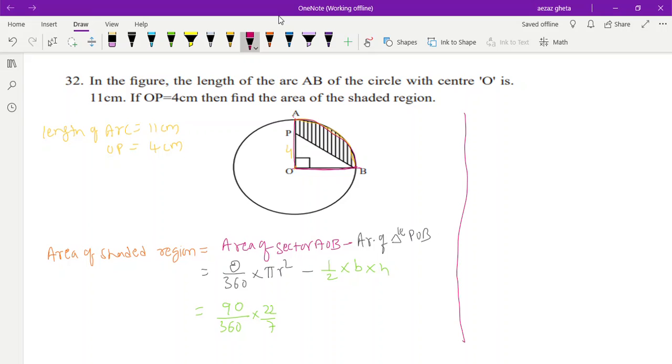How we will find radius? By using the formula length of arc. Length of arc, then what? Theta by 360 into 2πr, great. So theta is 90 by 360, 2 into 22/7, radius we don't know but length of arc we know - 11.